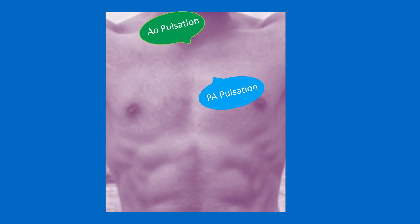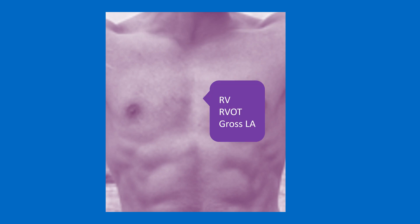The second category is visible pulsations. Suprasternal pulsations can be seen in aortic aneurysm and aortic regurgitation. A large dilated pulmonary artery can cause pulsations in the second left intercostal space. Left parasternal pulsations can be seen in right ventricular enlargement. Grossly enlarged left atrium with mitral regurgitation and dilated right ventricular outflow tract in Epstein's anomaly are other rare causes of left parasternal pulsations. Right ventricular outflow tract pulsations in Epstein's anomaly are often better seen than felt.